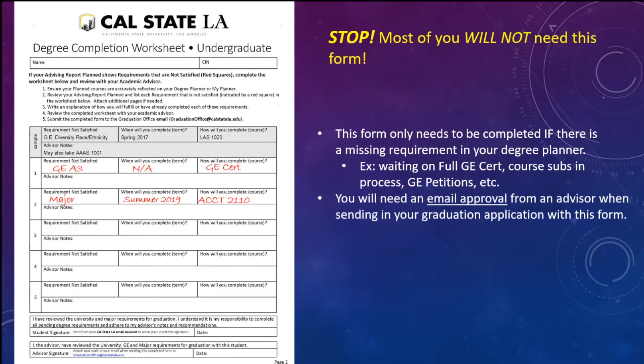When you do the degree completion worksheet, you need advisor approval. The advisor doesn't need to sign anything — they just have to send you an email saying they approve your application. Then review your degree completion worksheet to make sure you did everything right. You'll submit the application, the worksheet, proof of payment, and the advisor approval email — all of those go to the grad office.